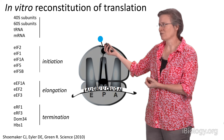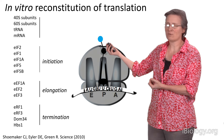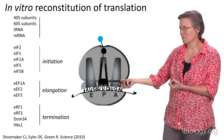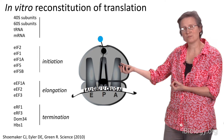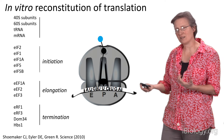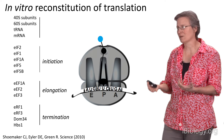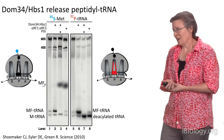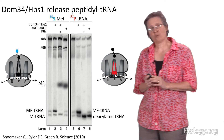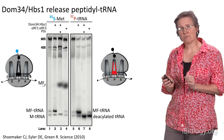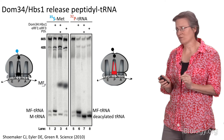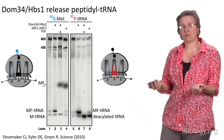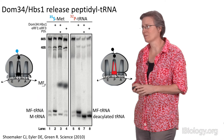We can label tRNA substrates, amino acids, messenger RNAs, and ribosomes, and follow the fates of various components to ask about biochemical reactions. I'm going to show you one example of a biochemical reaction that taught us something about DOM34 and HBS1 function — factors that had been implicated in mRNA decay but whose activity on the ribosome was unknown.